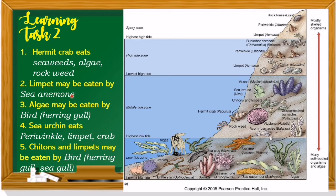For number 2, limpet may be eaten by sea anemone — the limpet is at the top and will be eaten by sea anemone. For number 3, algae may be eaten by the bird, the herring gull — the bird will eat the algae. For number 4, sea urchin eats periwinkle, limpet, and crop. The sea urchin will eat them.